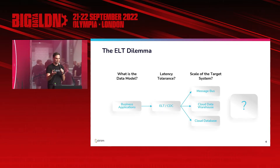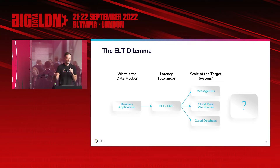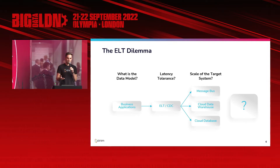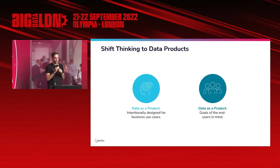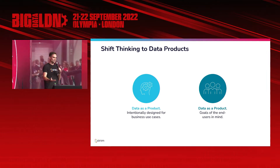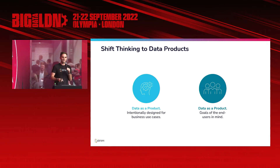Teams need to think about these things up front: what is the data model I'm serving to my business users — whether in reporting, reverse ETL, or operationalized analytics? What's the latency tolerance on my target systems? Data warehouses have ingest throughput issues compared to streaming and messaging systems. Really, what we want to encourage is shifting your thinking to data products — data intentionally designed for business use cases, with the goals of your end users in mind. Work backwards from their use cases and build your data infrastructure to meet their actual requirements.